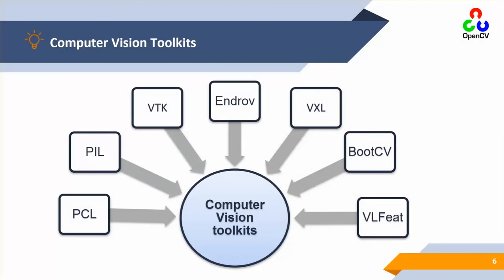There are a plethora of computer vision toolkits available — so why do we select OpenCV? I have a separate video lecture comparing these vision toolkits, but briefly: the VTK toolkit is an open source software system focused on the generation of computer graphics and image processing for scientific visualization alone.